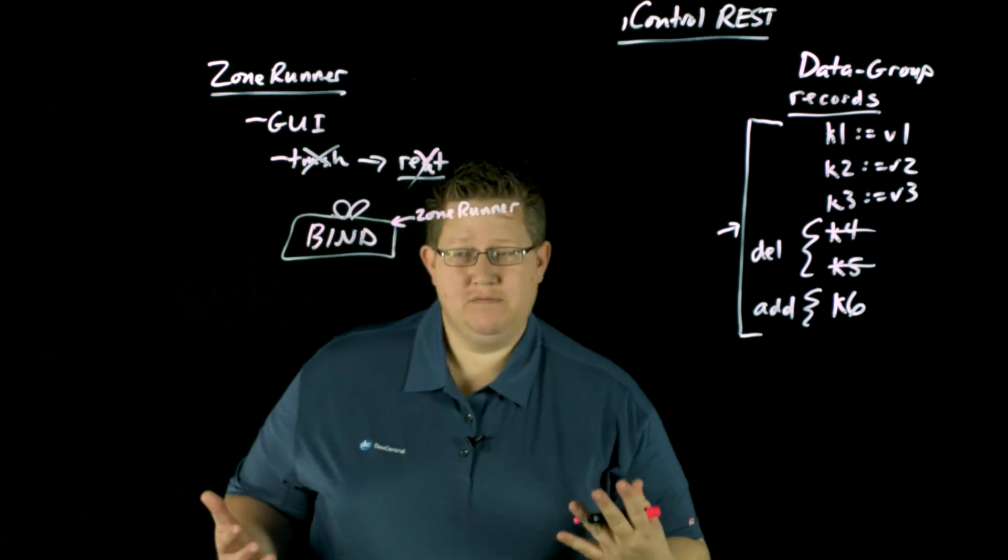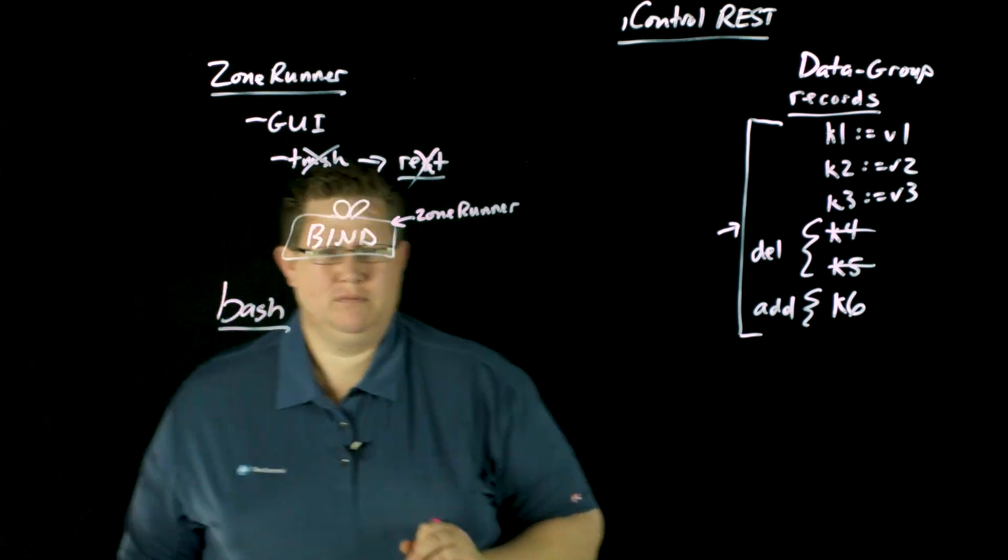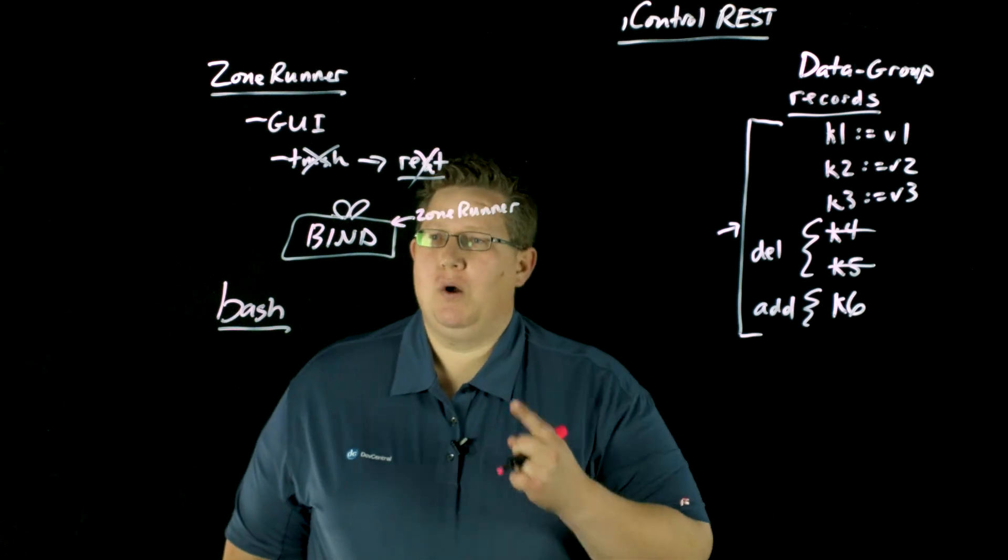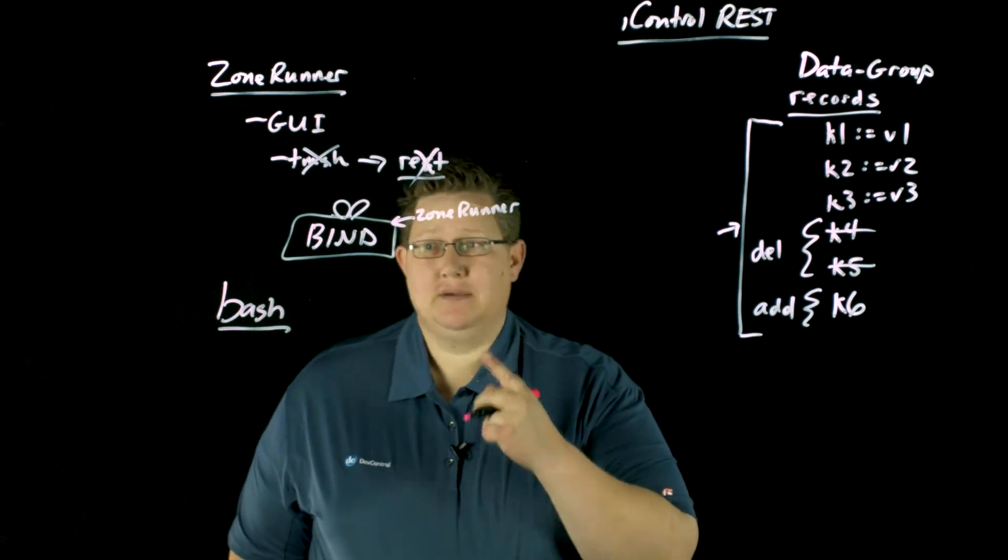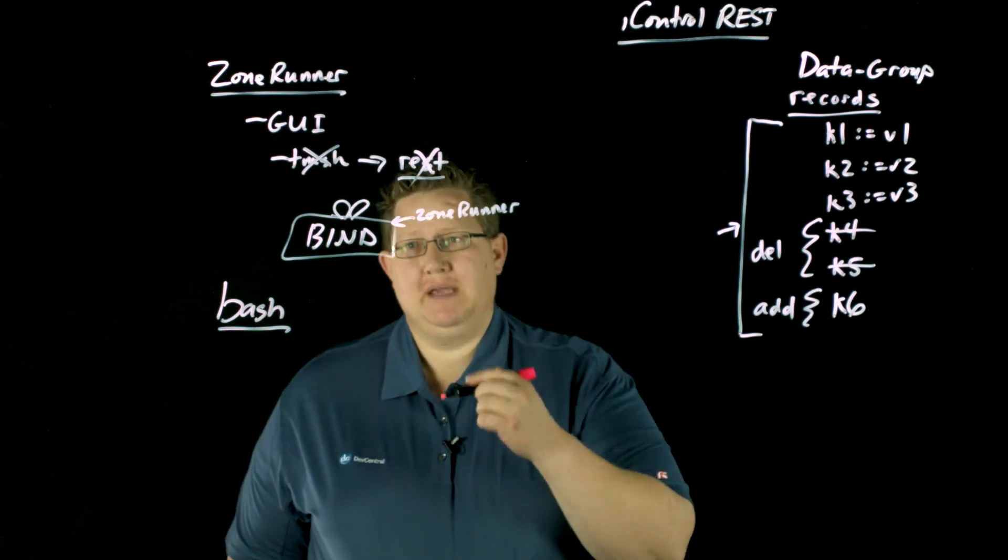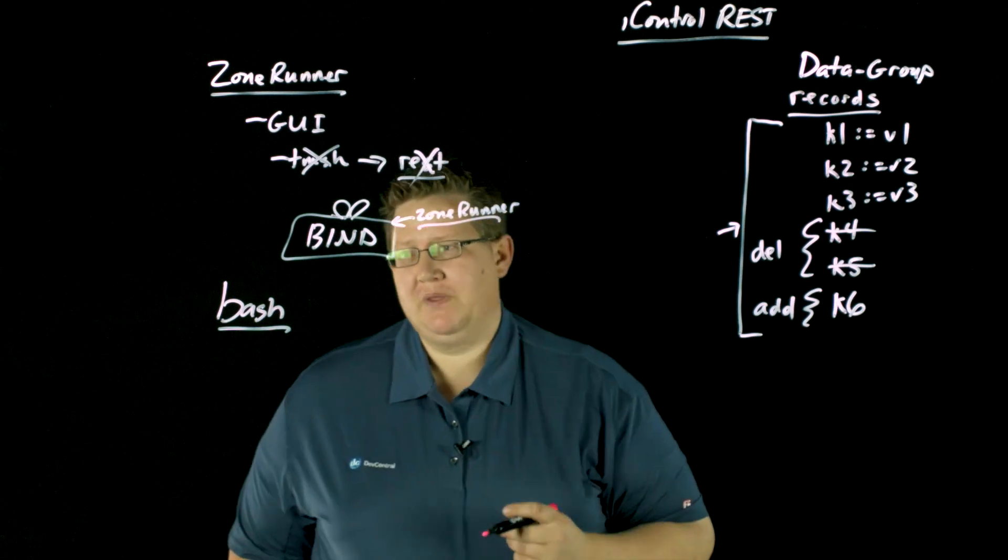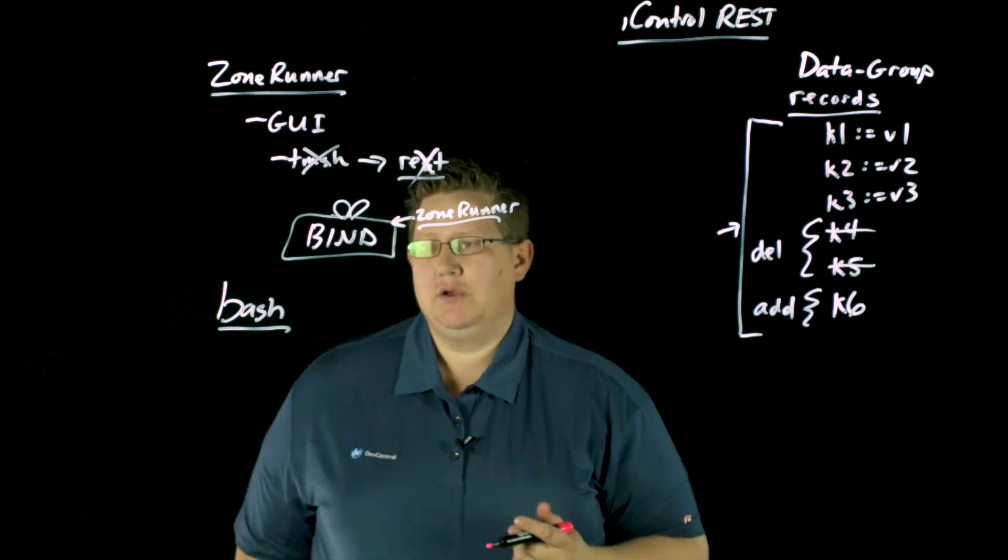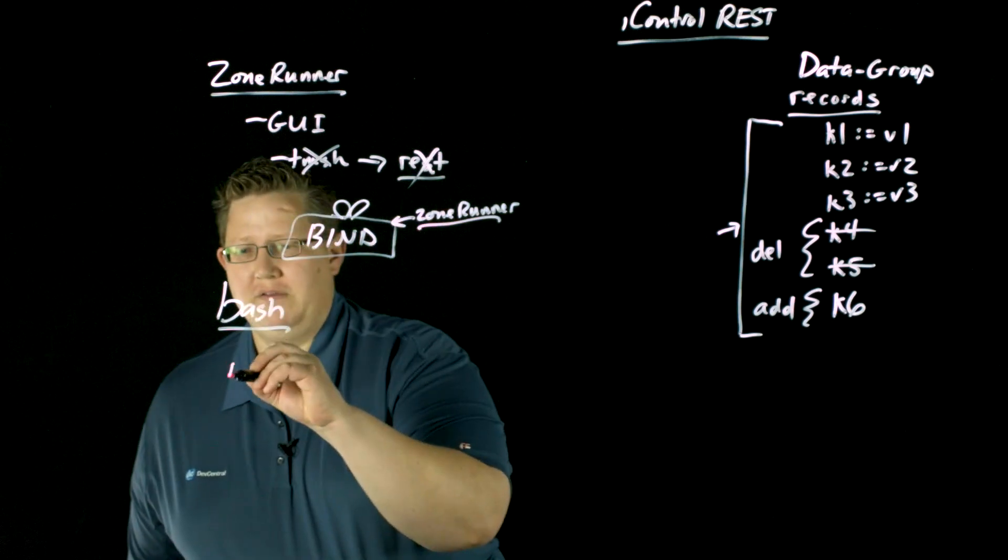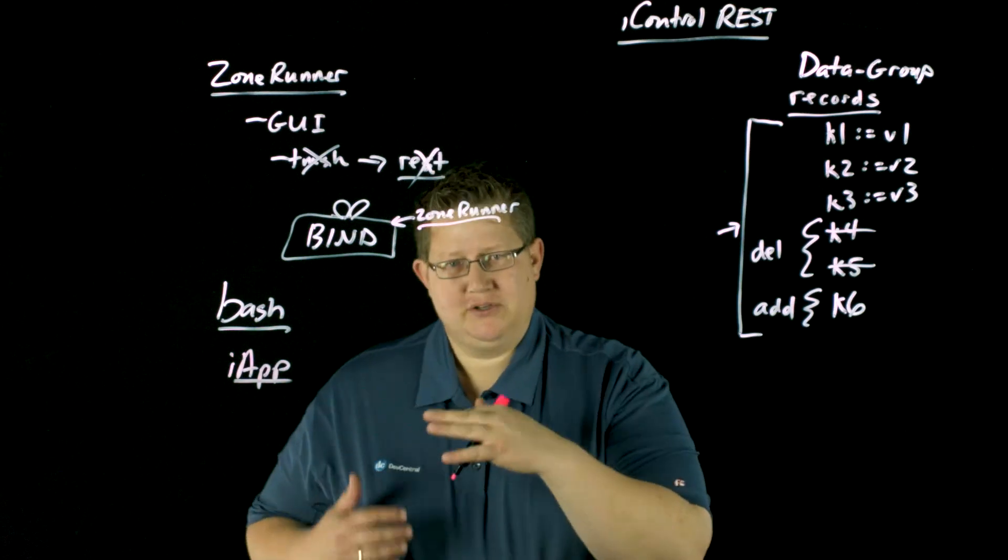And so what you can do via REST is you can run bash commands via the iControlREST interface. And so there is an article out there on ask that details the steps that you need to go through in order to safely update bind from the command line instead of from ZoneRunner. And so you can do that via bash if you build out your logic in accordance to that solution.